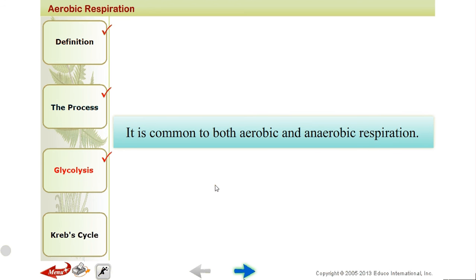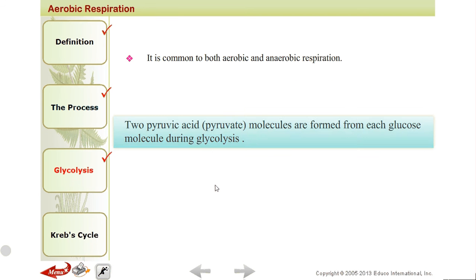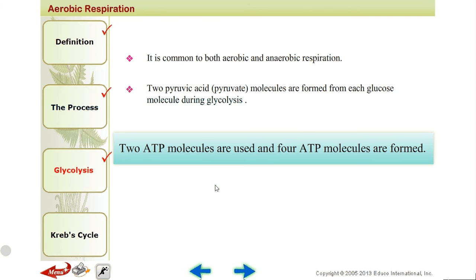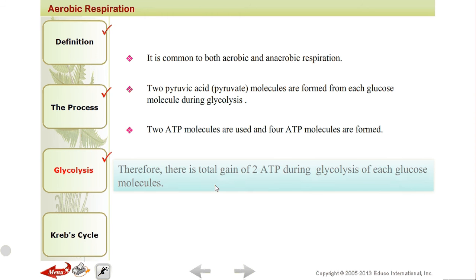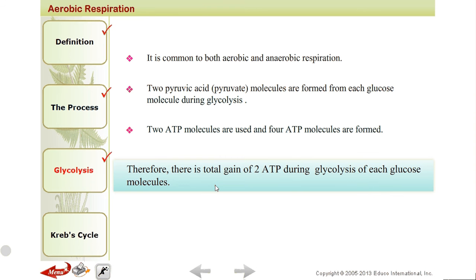The first process is glycolysis, which is common for both aerobic and anaerobic respiration. First glucose is broken down, then pyruvate is formed. How pyruvate breaks down depends on the conditions. During glycolysis, 2 ATP molecules are used and 4 ATP molecules are formed, giving a net gain of 2 ATP molecules.